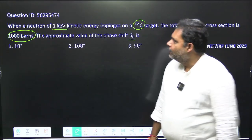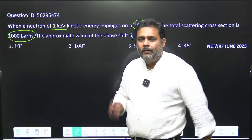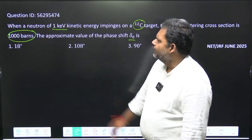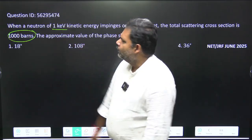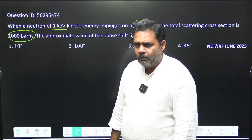Hello friends. Let us try to solve one more question from CSIR NET 2025 June examination. The question ID is 474 and this is a question from scattering, mainly quantum mechanics.